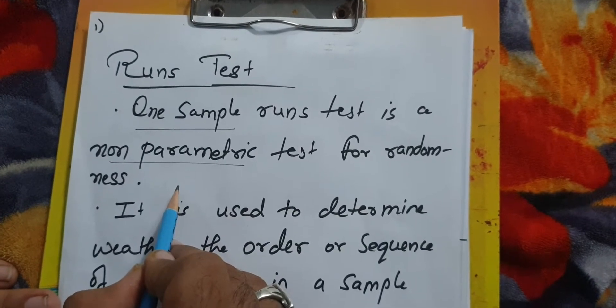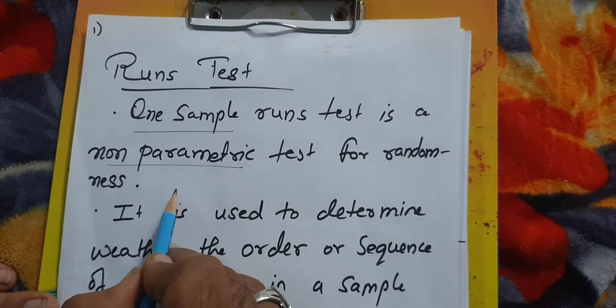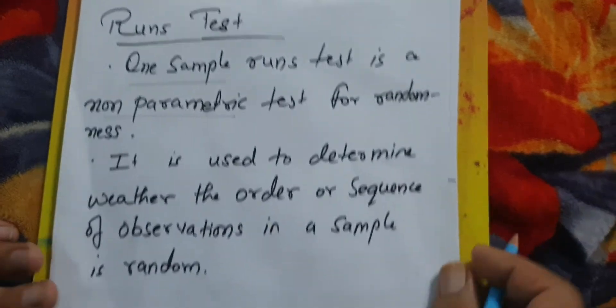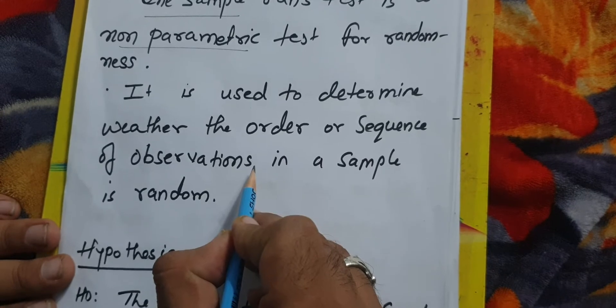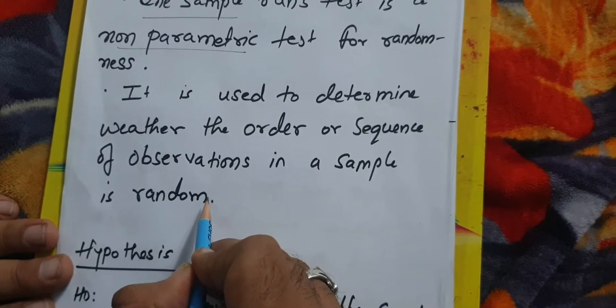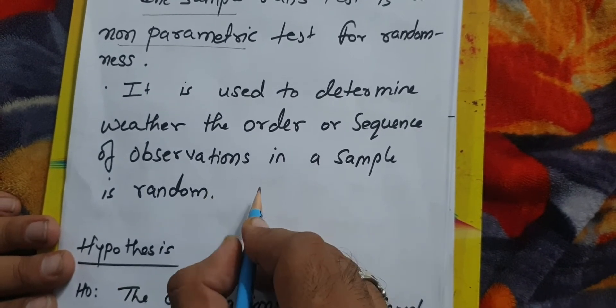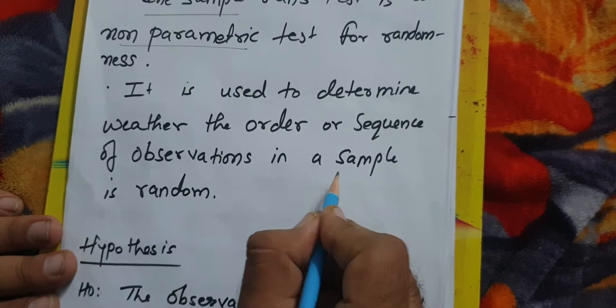We need to measure randomness of data, whether data is random or not. It is used to determine whether the order or sequence of the observation in a sample is random or not, and that's why we infer from sample to population.